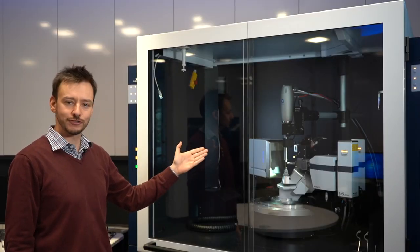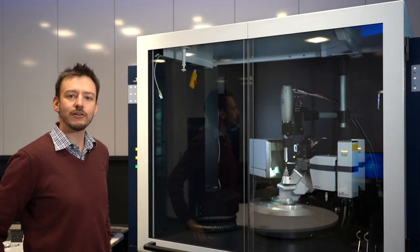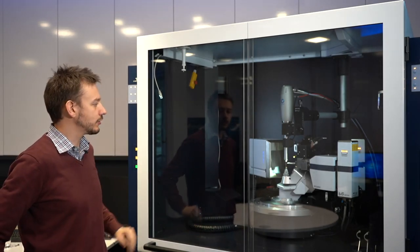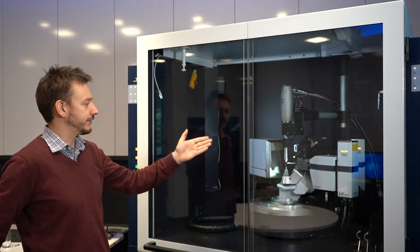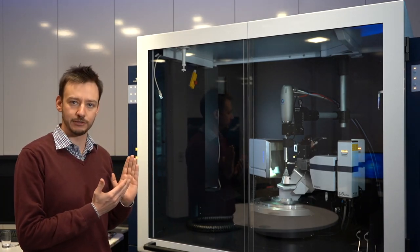This is my D8 Venture Duo system with a copper source in front and a moly source in the back. For our absorption experiment we are going to use the moly source and therefore I also remove the beam stop because we want to use the direct beam to do our absorption experiment.